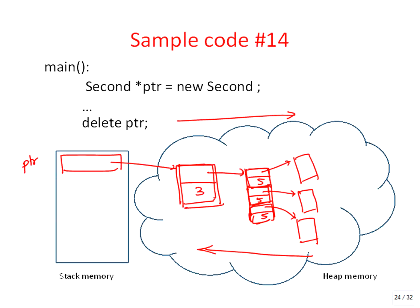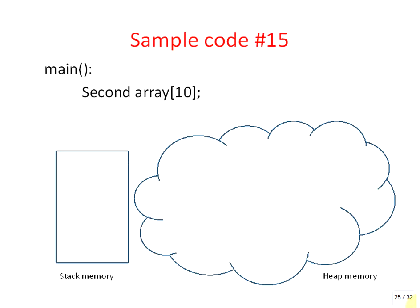You have now a second pointer — it's just a pointer pointing to a new second object. Second object is like this — with a three — and then this pointer points to array of three first objects. Internally they are pointing to array of five integers. So all this happens because of that one line.